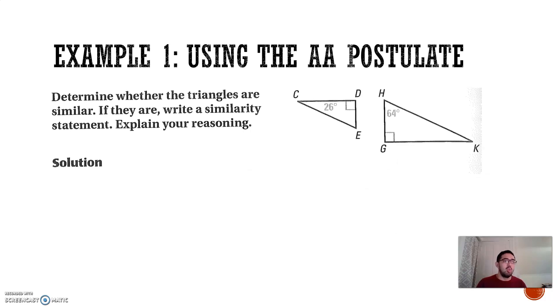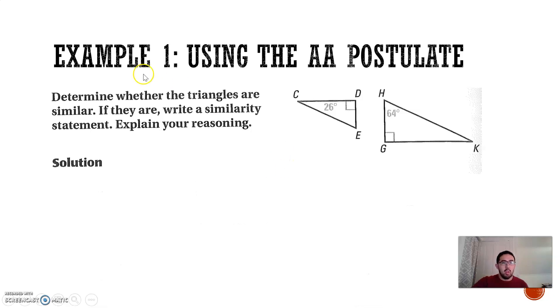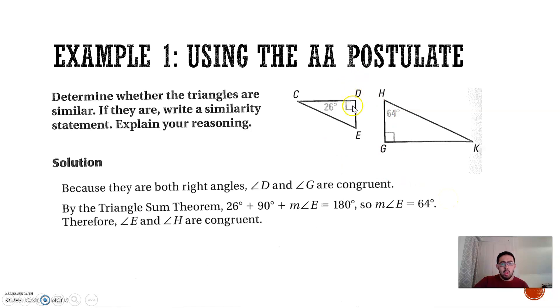So how can we use this AA postulate? Well, if I'm looking at these two triangles, I'll know that D and G are congruent. Why? Because these two are both right angles. Now, I know that H plus G plus K must equal 180, and E plus D plus C must equal 180. So, if I take 26 and I add 90, and I add it to angle E, it must equal 180.